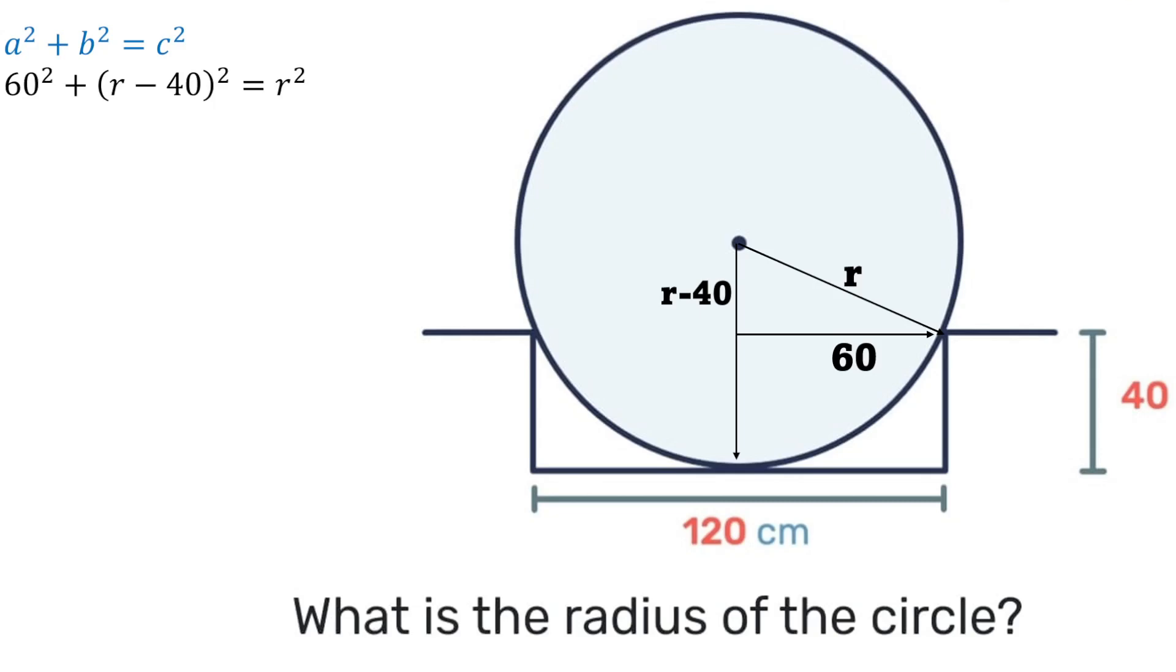r minus 40 squared is r minus 40 times r minus 40. Expanding brackets we'll have r squared minus 40r minus 40r plus 1600. Simplifying that we'll have negative 80r.